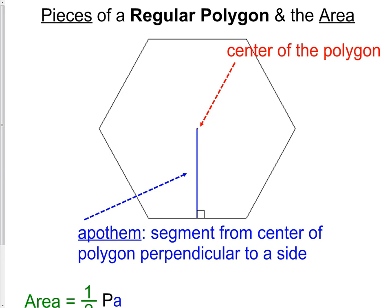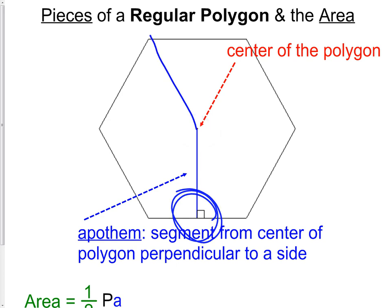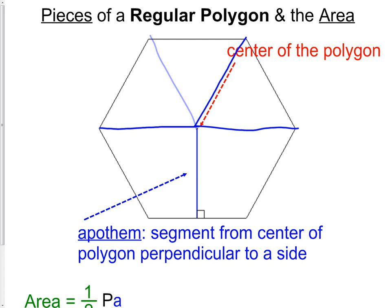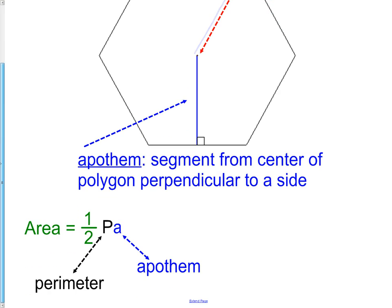The center is simply the centermost point of the polygon. The apothem is a segment that reaches from the center of the polygon perpendicular to a side — it does not go to a corner. The apothem will always go perpendicular to a side. Once we have that, the formula is: area of a regular polygon equals one-half times perimeter (P) times apothem (a).